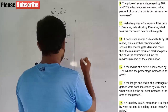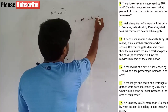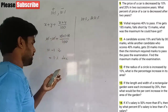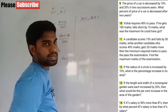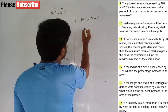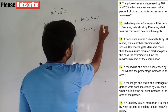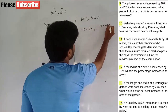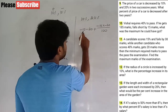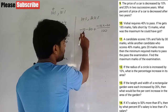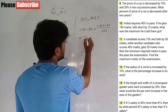Successive decreases of 10% and 20%: decrease value is minus 10, minus 20. Apply: minus 10 minus 20 plus (minus 10 into minus 20) by 100. So minus 30 plus (minus 10 into minus 20).